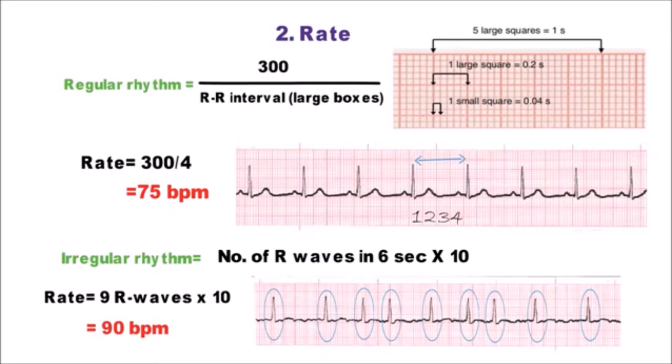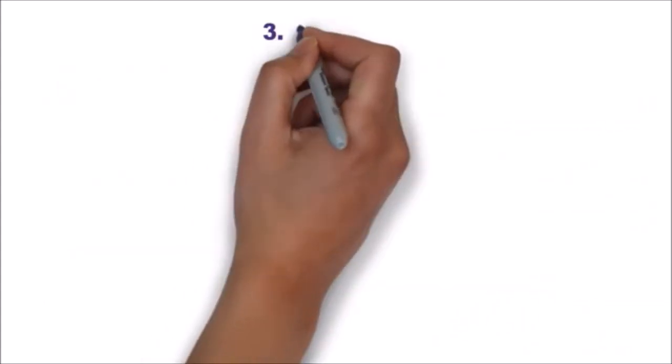So 300 divided by RR interval formula is valid only if the rhythm is regular. That is why we should first see the rhythm and then should calculate the rate accordingly.